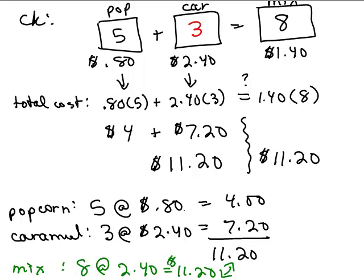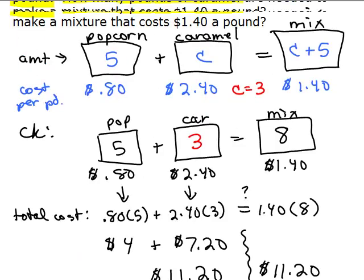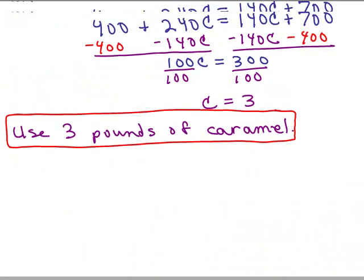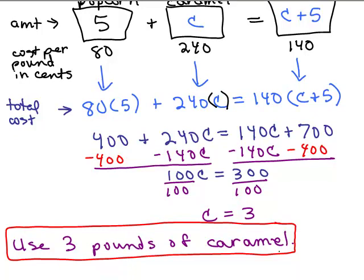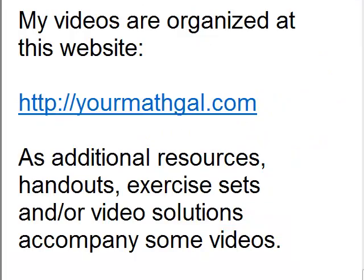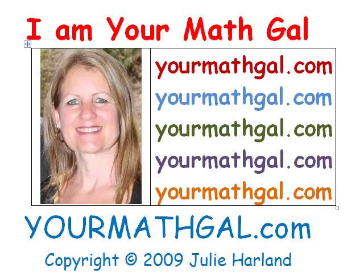But oops, I did that wrong. That was 8 times $1.40. I did the arithmetic right but wrote 240. So 8 pounds at $1.40 is also $11.20. So it checks out and therefore, this is correct. We're going to use 3 pounds of caramel. Thank you.